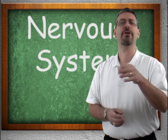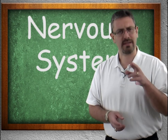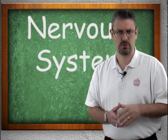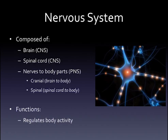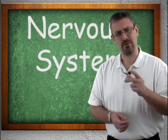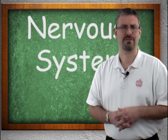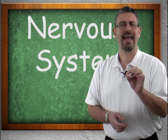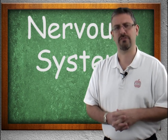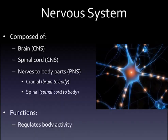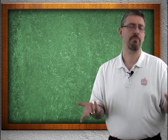Continuing on, we have the nervous system. The nervous system is broken down into two sections: the central nervous system, or CNS, which is composed of the brain and the spinal cord; and the peripheral nervous system, or PNS, which is composed of the spinal nerves coming off the spinal cord as well as nerves coming off the brain. Its job is to regulate body activities.